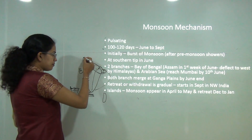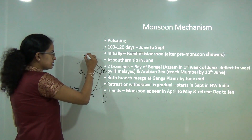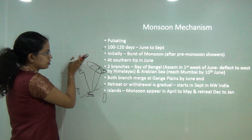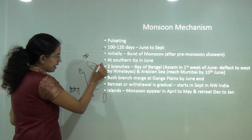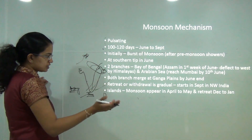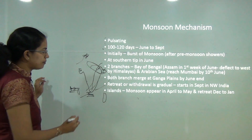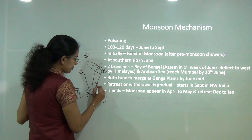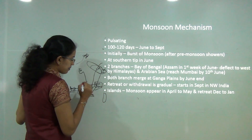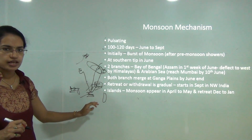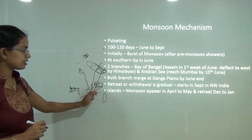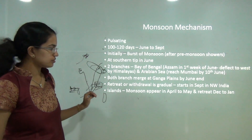In September, gradual retreat begins from the northwest of India. It retreats from the eastern regions by October and November. This retreating monsoon brings winter rainfall to Tamil Nadu, which is beneficial for certain crops — locally called cherry blossoms.